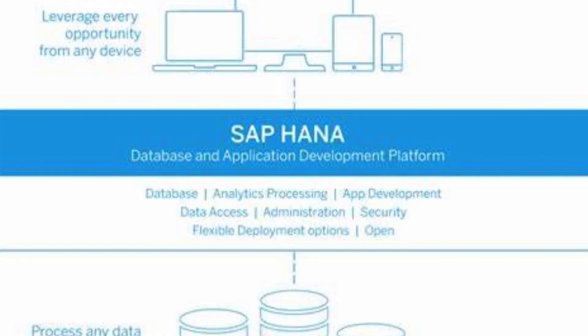HANA is an in-memory, column-oriented, relational database designed to handle both transactional and analytical workloads. It is the foundation of S/4HANA, speeding up processes by holding the entire dataset in memory.